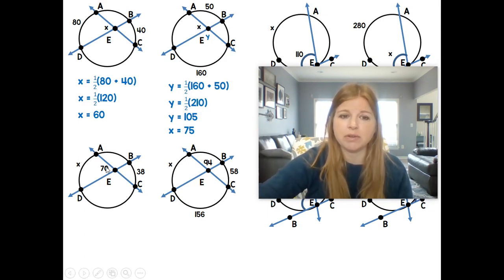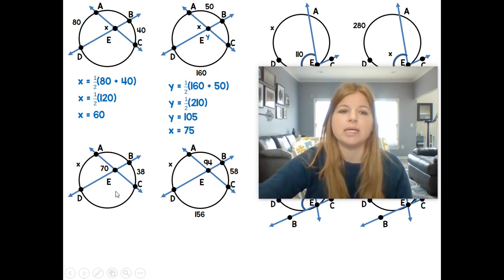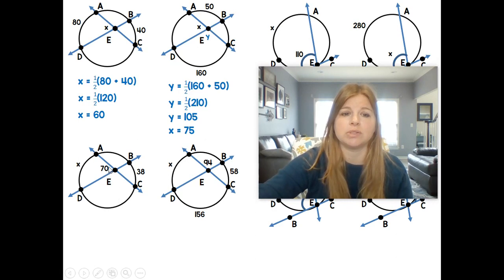This one, we're actually given what the angle is, but we're wanting to find this arc X. So we follow the same pattern, but you'll notice the values go in the different spots. So instead of X is equal to, it's actually 70 is equal to. So the angle measure is equal to one half X plus that arc of 38.